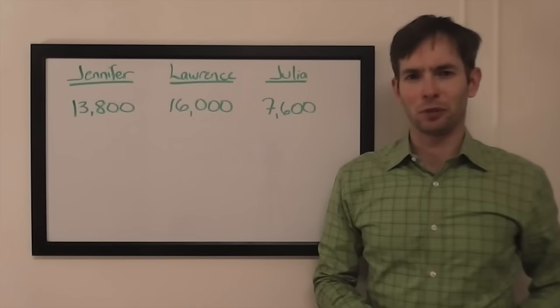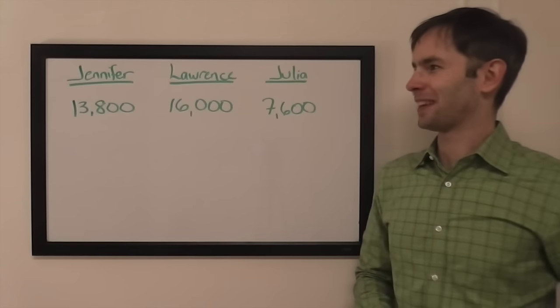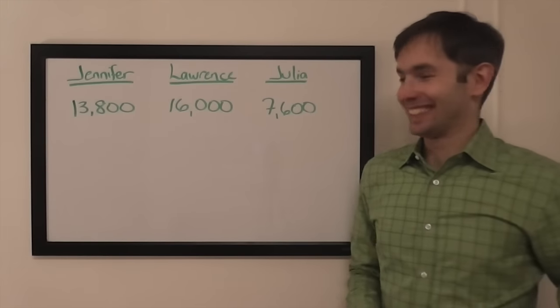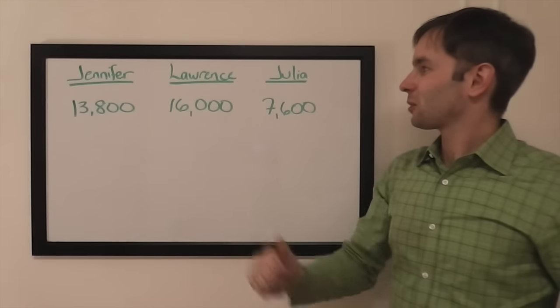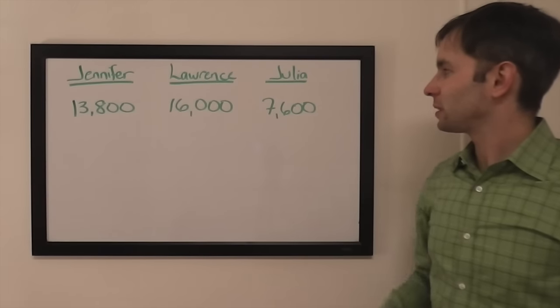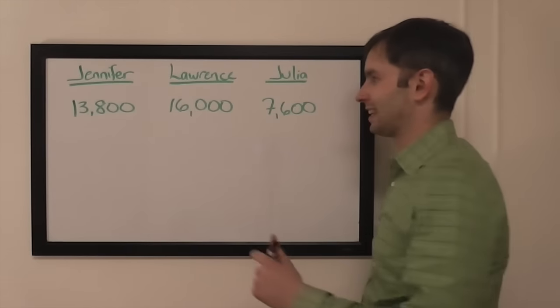Scopes would have been a little young at that point and a man also. Alright, so Jennifer returning champ 13,800, Lawrence 16,000, and Julia 7,600, everyone in it.